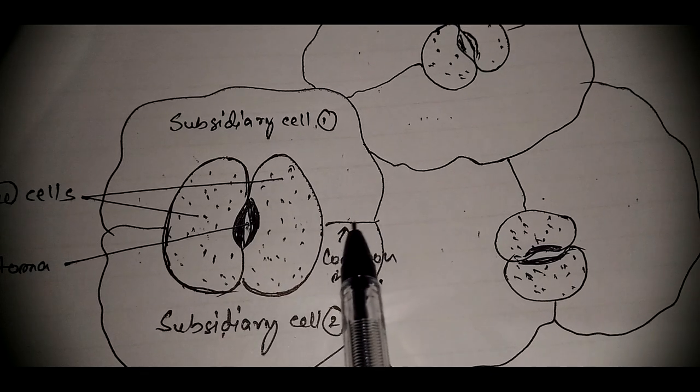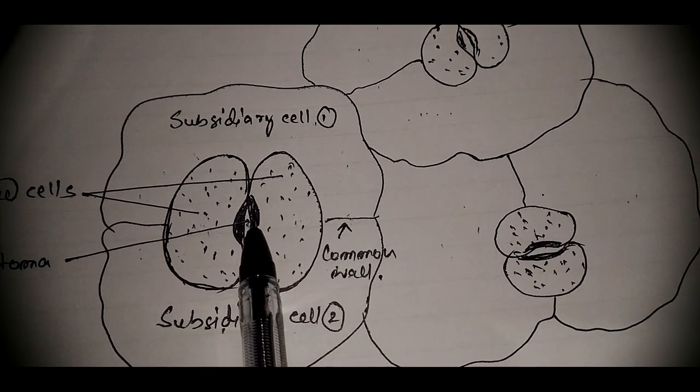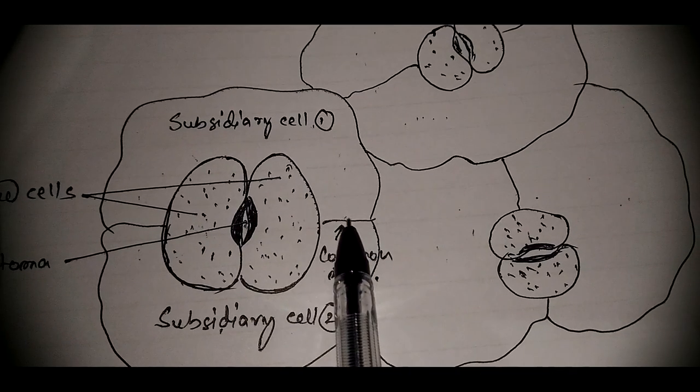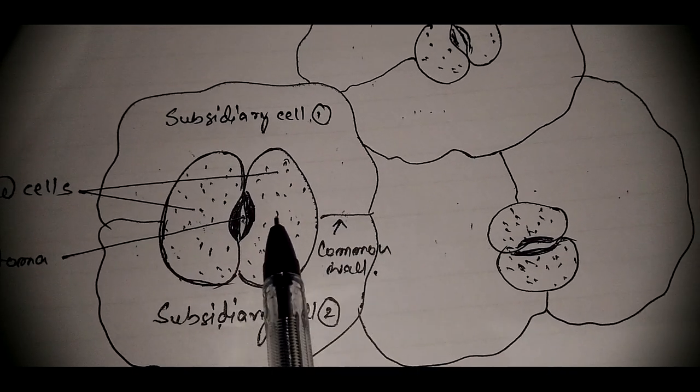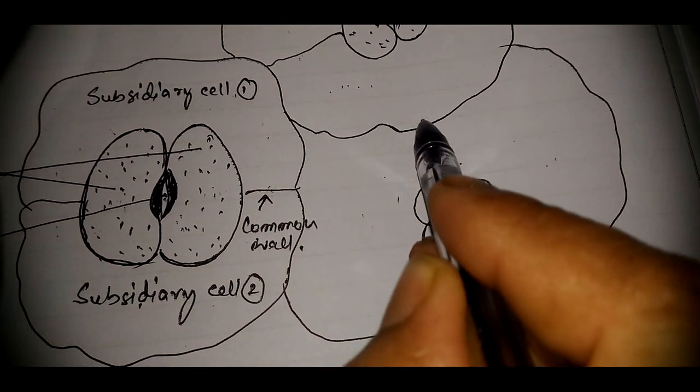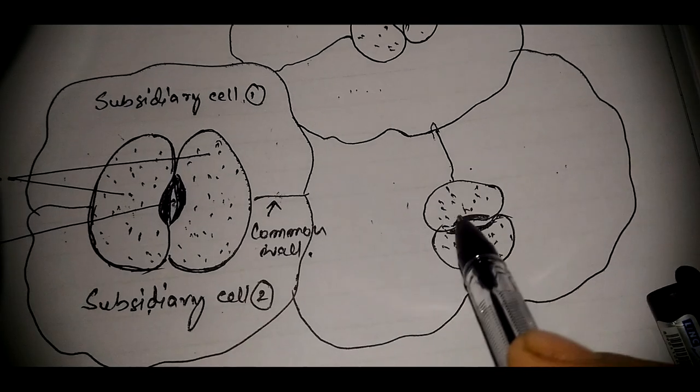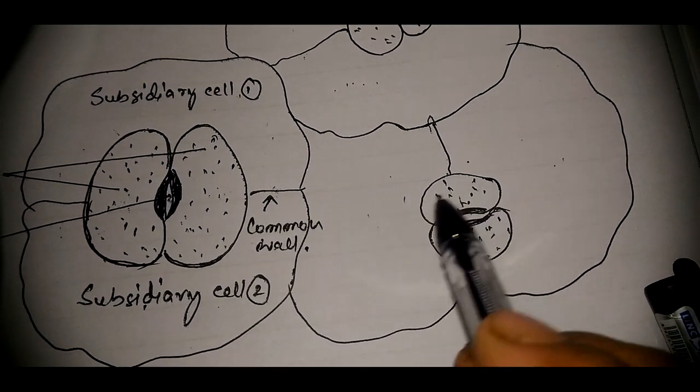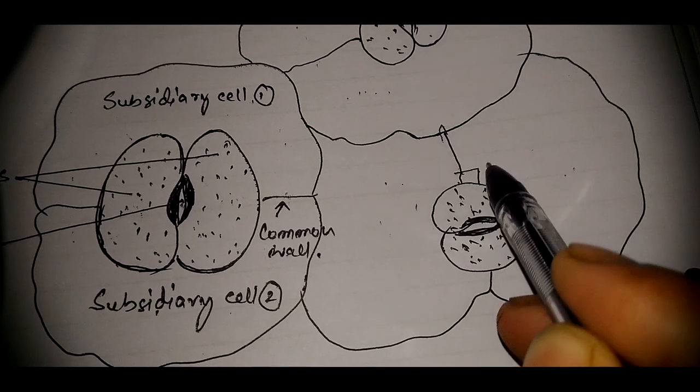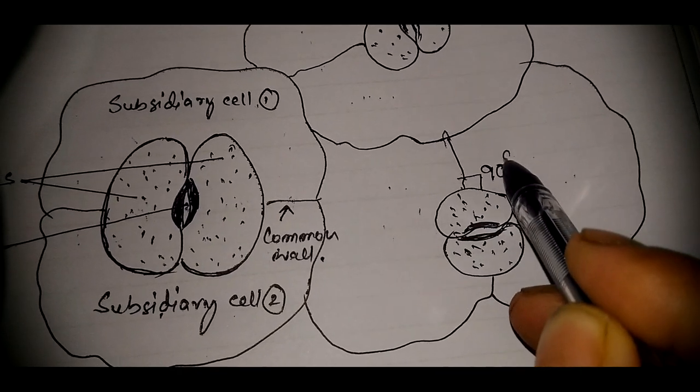Interestingly, the common wall is at right angle to the stomatal aperture, or we may say that the common wall is at right angle to the guard cell. Here also, if this is the wall then it is the guard cell. So this angle is 90 degrees.